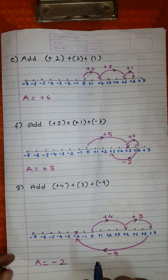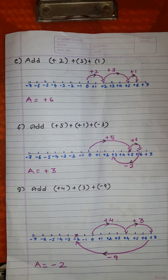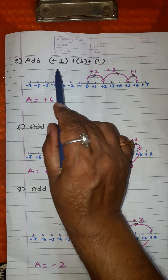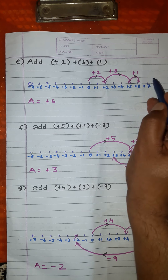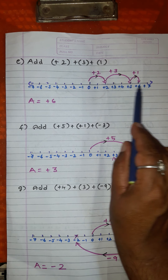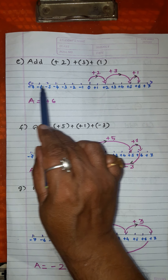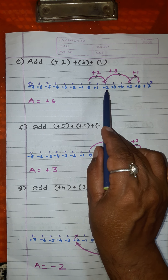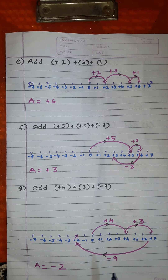Up to the sixth problem, we added two integers. But how do we add if more than two integers are given, whether positive or negative? Let us learn how to add more than two integers. Draw a number line, marking positive integers to the right of 0 and negative integers to the left of 0.